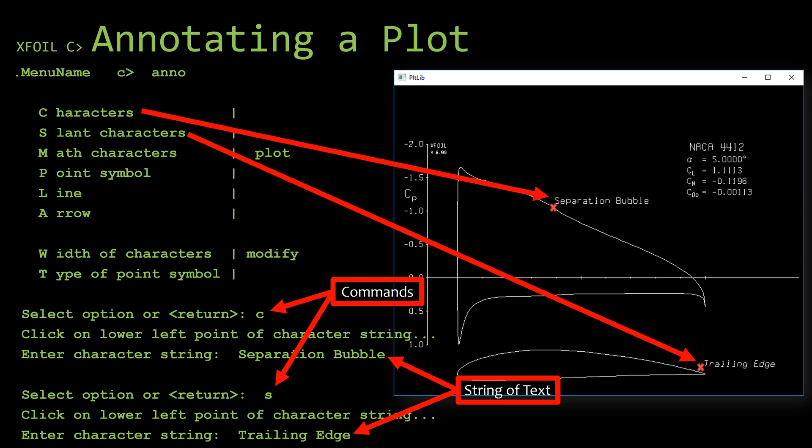The difference between characters and slant characters is that the slant characters is italicized. As you can see by the text I copied over from X-Foil, when I choose one of these commands, it's going to ask me to click on the lower left point of the character string where it's supposed to place the text. After you go ahead and identify the location, it will then ask you for the text of the message. Type it in and hit Enter.